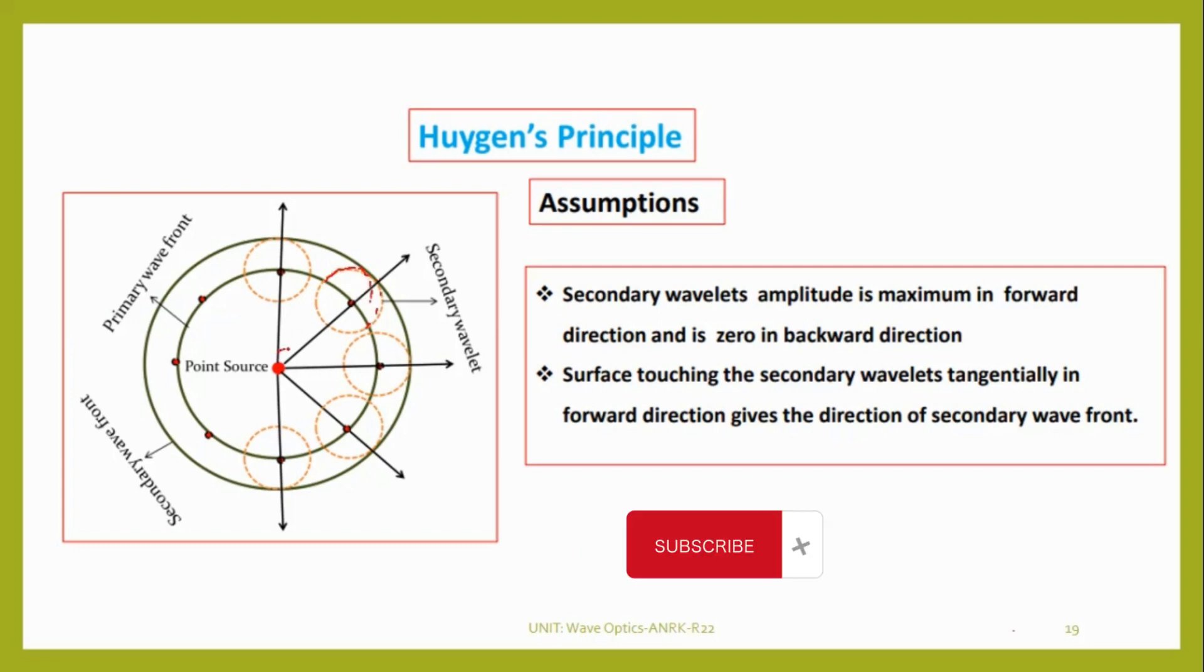Secondary wavelet's amplitude is maximum in forward direction and zero in backward direction. The surface touching the secondary wavelets tangentially in the forward direction gives the direction of the secondary wavefront.